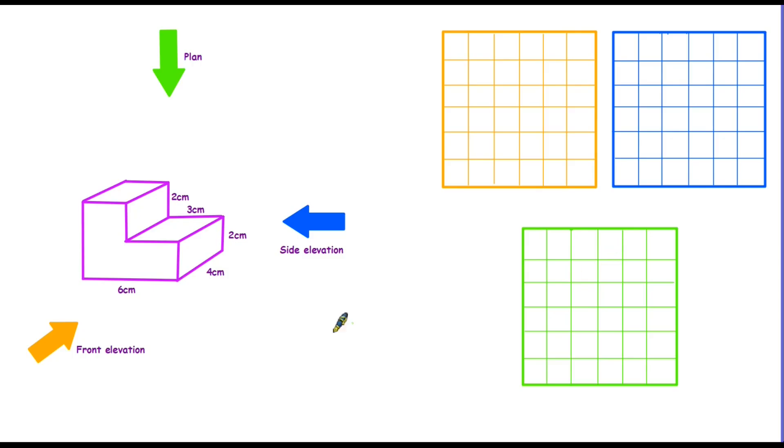Let's start by having a look at the shape on the left hand side of the screen here. It's a three-dimensional shape. I guess it looks a little bit like the bottom of the staircase. Now what we are being asked to do here is put ourselves in different positions in relation to this shape and consider what it might look like from that position. So what do I mean?